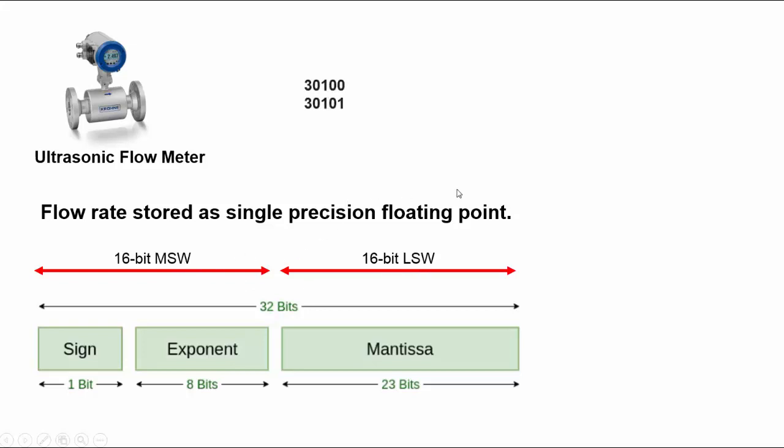So let's take for example, let's say 30100 and 30101—these are the two input registers that are used to store the 16-bit MSW and the 16-bit LSW. In some devices from some vendors, it's stored like this: the MSW in here and the LSW here.